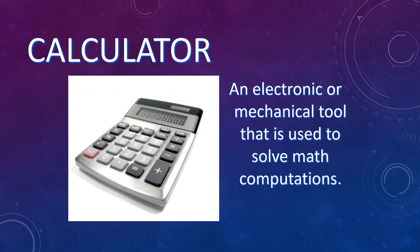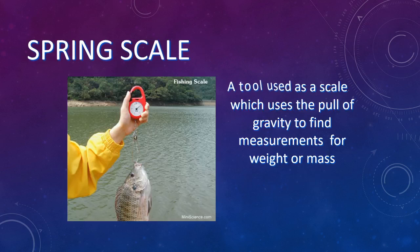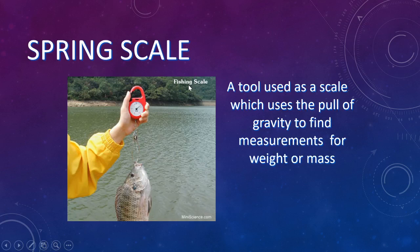A calculator — most of you know what these are. You use them to help you solve math problems, and in science we'll often have these as well. Next is a spring scale, otherwise referred to as a fishing scale, because fishermen use this to measure the weight of their fish. There's a spring inside and you put your object on the hook; it hangs down and tells you the weight because of the pull of gravity.